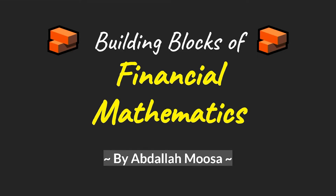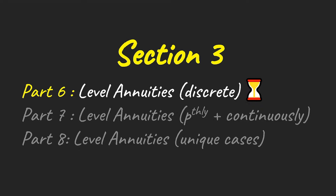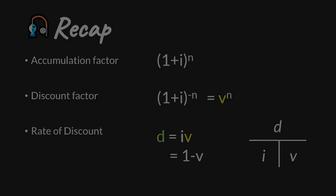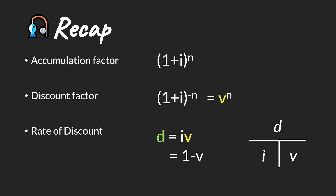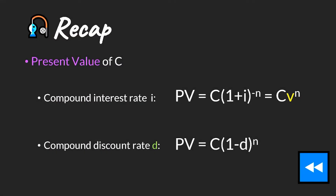In this video we'll be looking at level annuities, more specifically where cash flows are paid at discrete time points. We'll show how to accumulate or discount and find the present value of a series of cash flows. Let's recap what we've seen before: we know how to calculate our accumulation factor using an effective interest rate of i, our discount factor, our rate of discount, and how it relates to i and v. We can work out the present value of a single cash flow of c paid at time n.